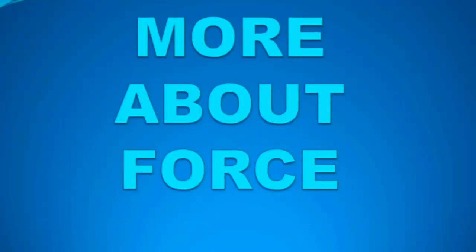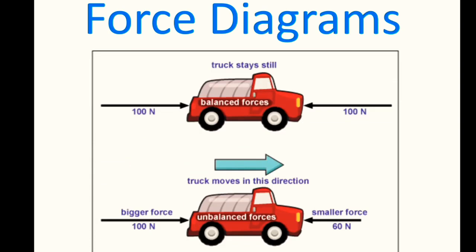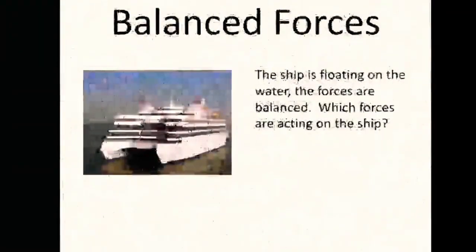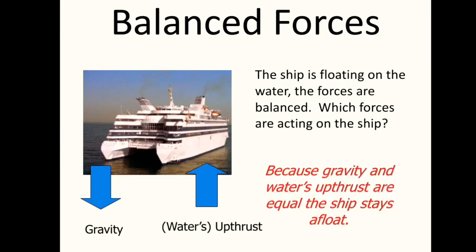Let's discuss more about force. Observe the diagram. The track on top stays still while the other track below moves in this direction. Now observe the ship — the ship is floating on the water. The forces are balanced. An example of balanced forces is a ship sailing. Why doesn't a ship sink even though it is heavy? Because gravity and water's upthrust are equal, the ship stays afloat.